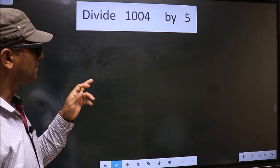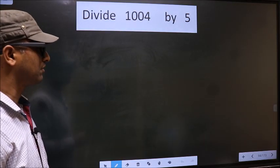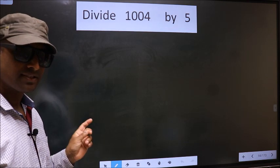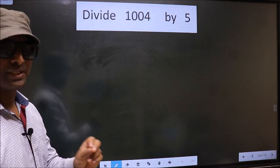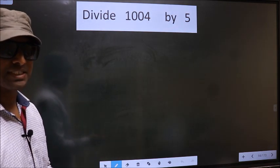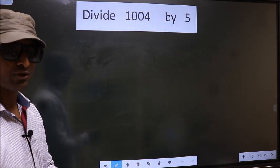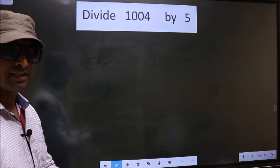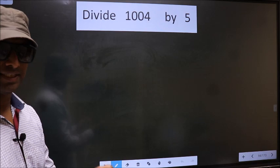Divide 1004 by 5. While doing this division, many make a mistake. What is the mistake that they do? I will let you know, but before that, we should frame it in this way.